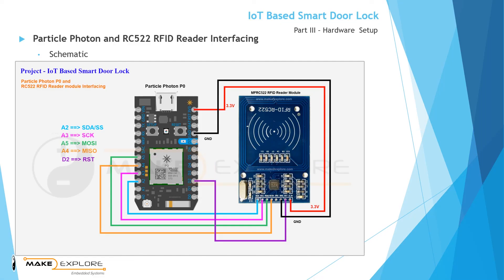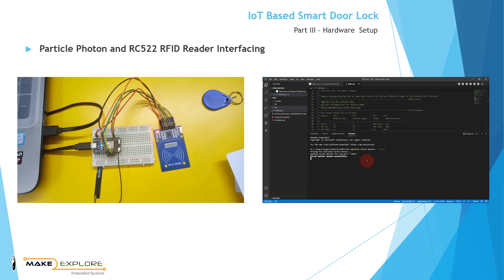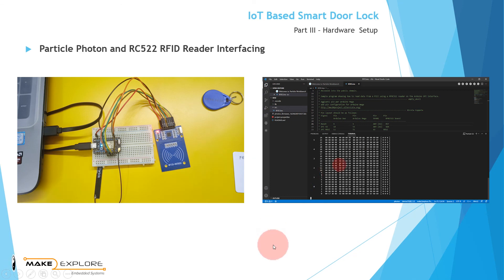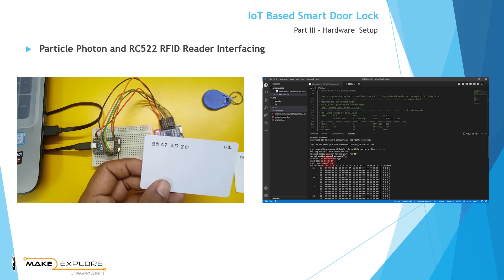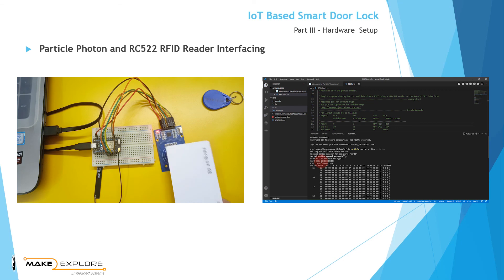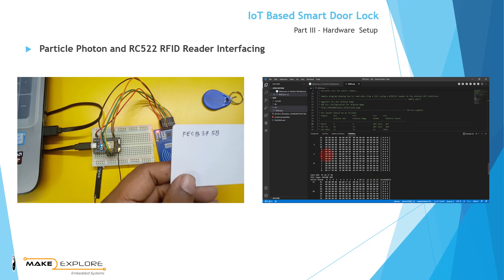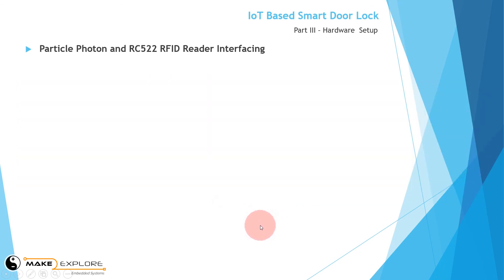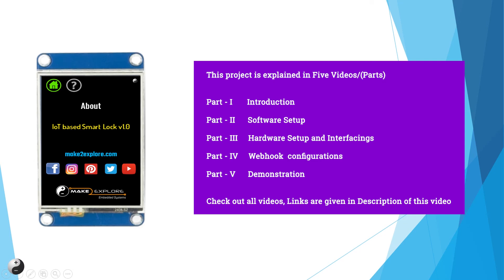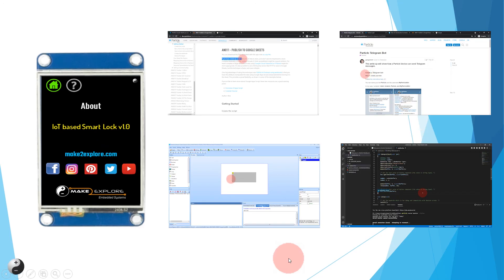Now compile and flash the code into the Photon as we did earlier. The demonstration shows that as soon as we place the RFID card on the reader, the reader starts reading the coded information in the RFID card, and the Photon simultaneously prints that information to the serial terminal. With this program we can read the RFID codes of the cards or tags which we are going to set as authorized in our main project and assign them to particular users. This was all about hardware interfacings in the IoT-based Smart Door Lock project. In the next video we will see webhook integrations and how to use the system to generate OTP — stay tuned.